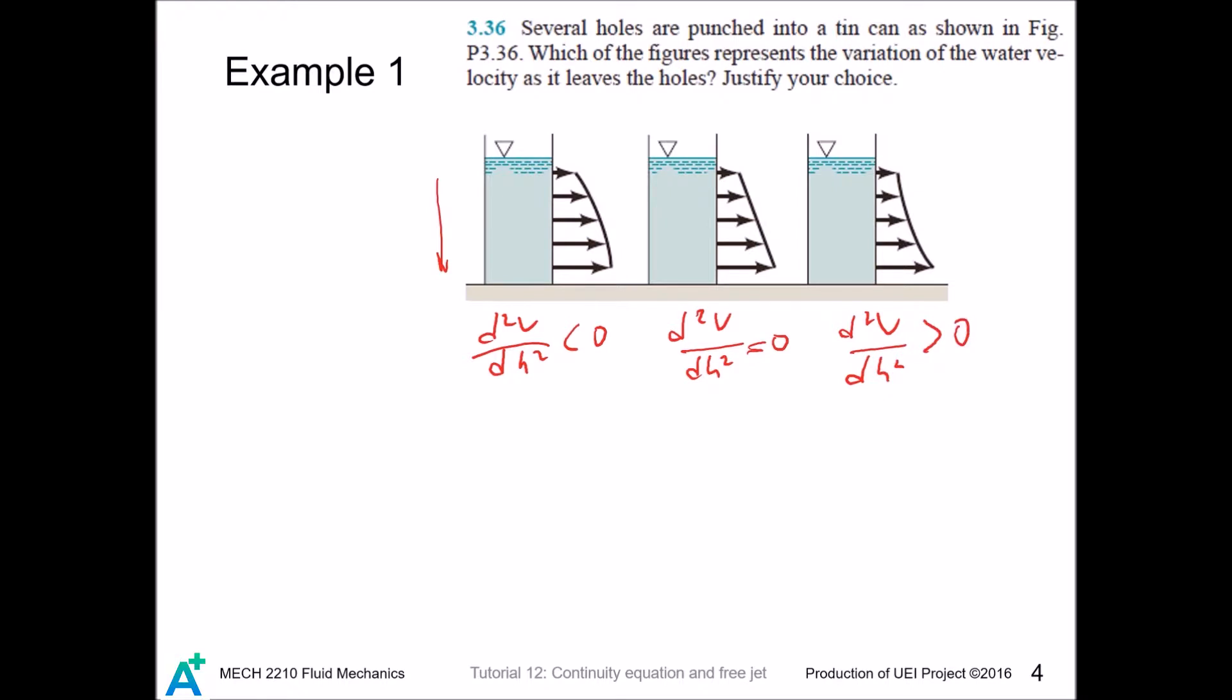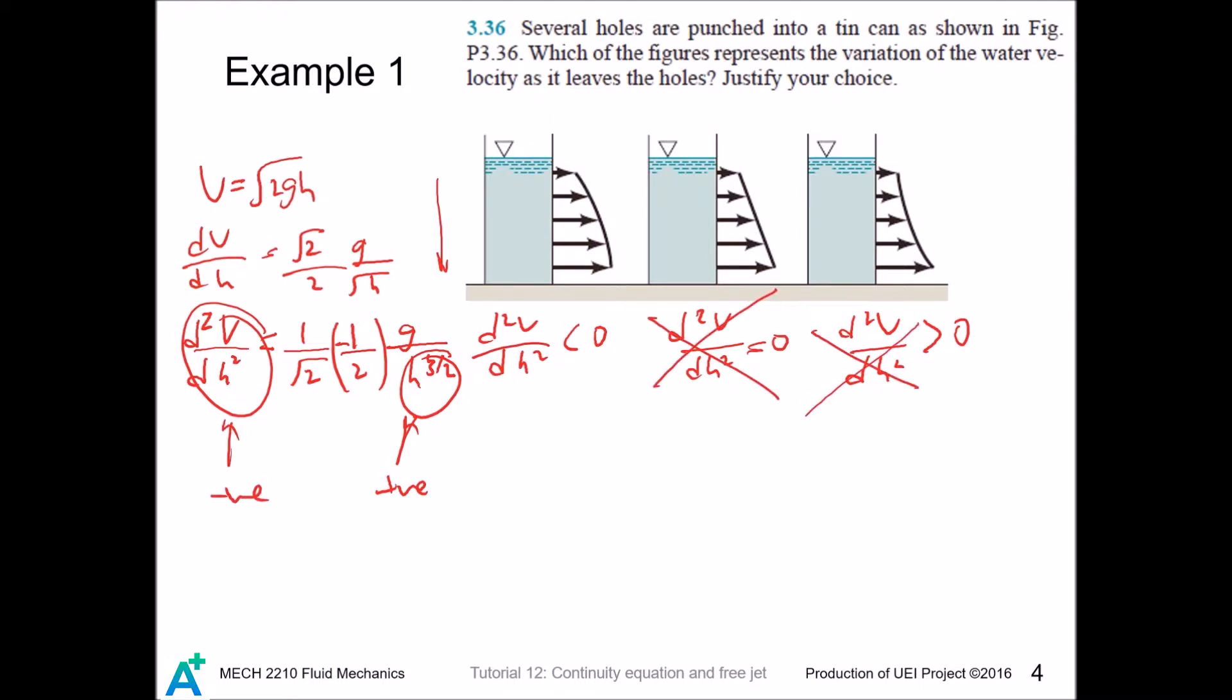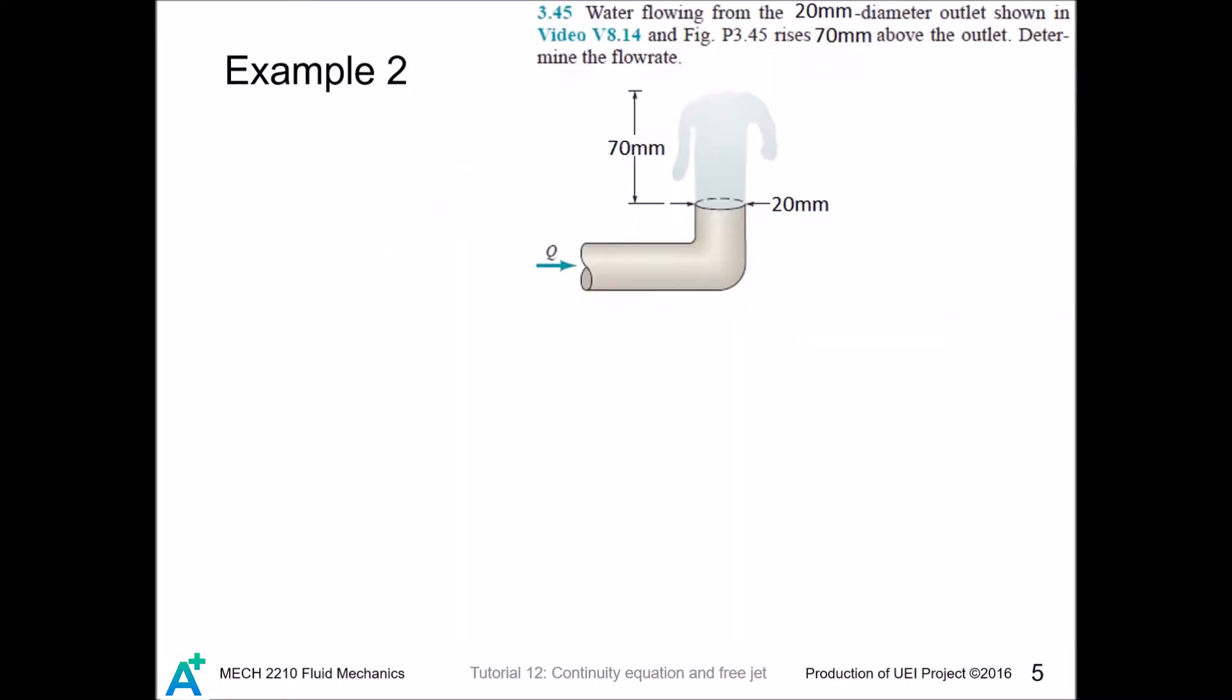We can use this observation to judge which is right. For the free jet formula v = √(2gh), we have dv/dh = √2/(2√(gh)). We do one more derivative by power law and this guy is always positive, so d²v/dh² is always negative. This means we have these two as wrong answers and only this as the right answer.